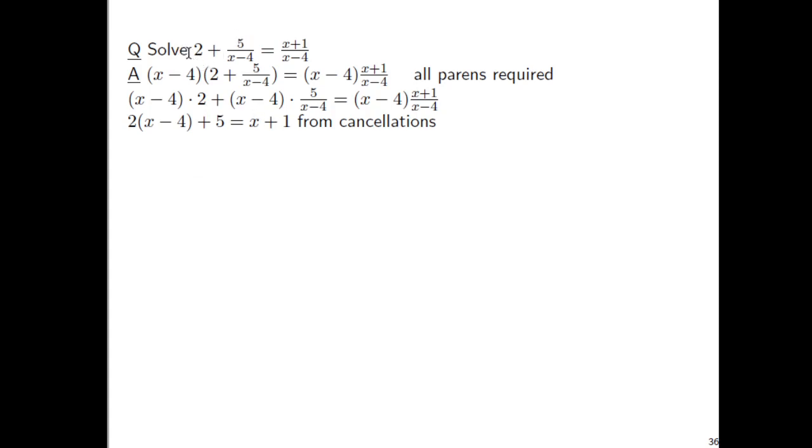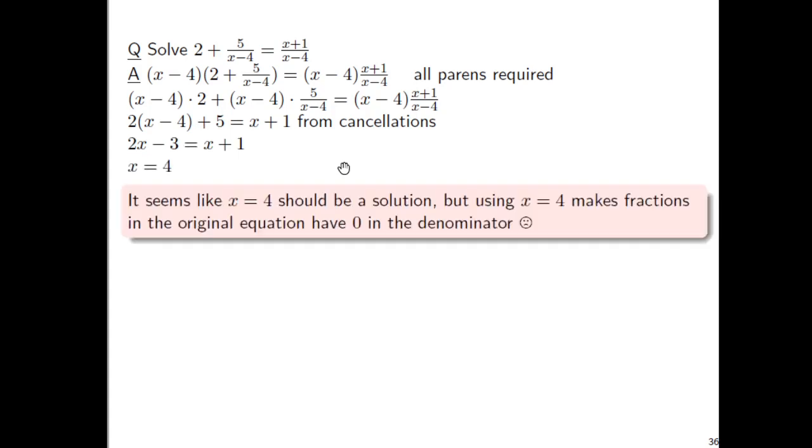So you have 2 times quantity x minus 4, then plus 5 equals x plus 1. You might get comfortable just writing that directly. And then from here, it's not so bad. 2x minus 3 equals x plus 1, we end up getting x equals 4.